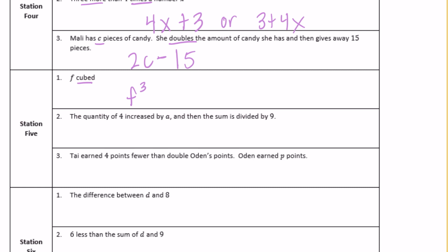Number two, the quantity of four increased by a, and then the sum is divided by 9. We have four increased by a, so 4 plus a. We want to find this first, then divide by 9. Or you could write it as a fraction: (4 + a) over 9.